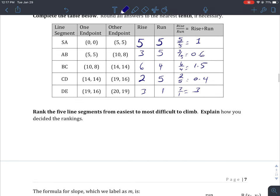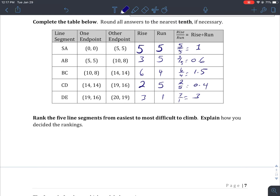I have to rank these line segments from easiest to most difficult to climb. The easiest is going to be the one with the lowest slope. The hardest one to climb is going to be the highest slope. The bigger the slope is, the closer that line is to being vertical, and it's really hard to climb a vertical line. If it's pretty flat, it's easy to climb - you could almost just walk across it.